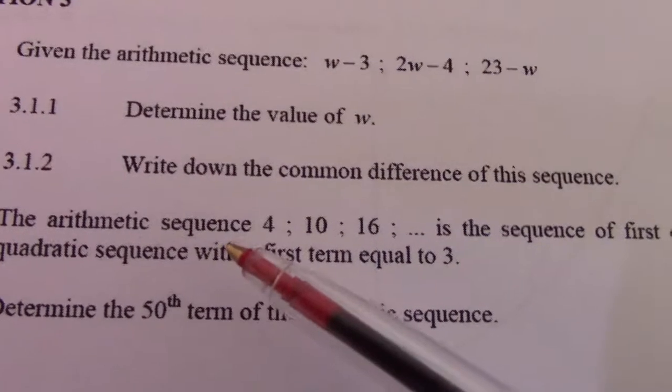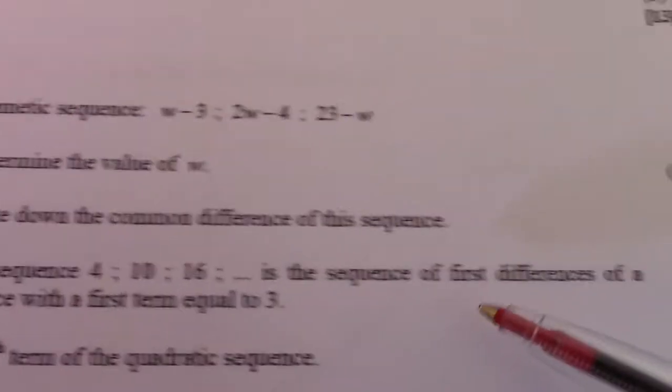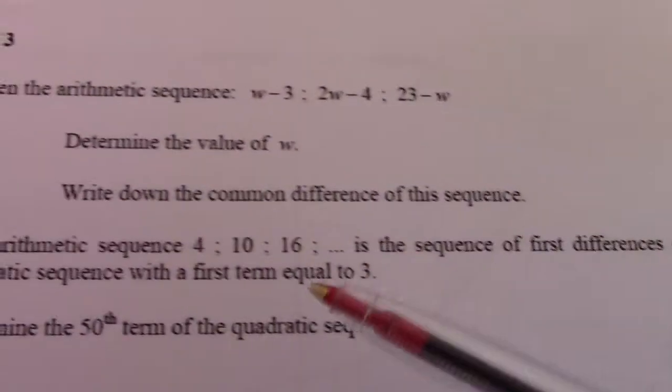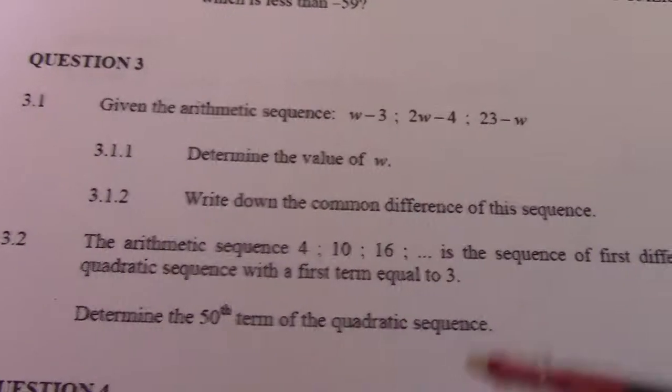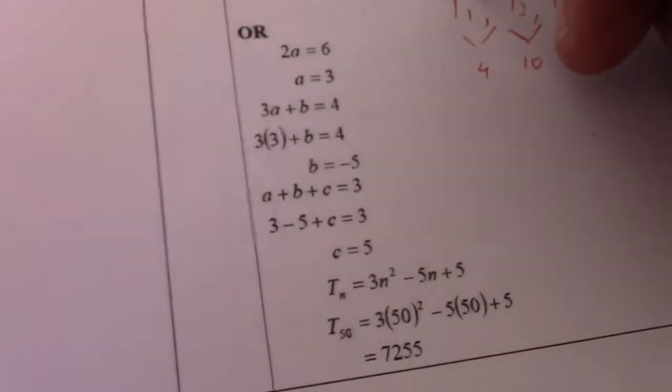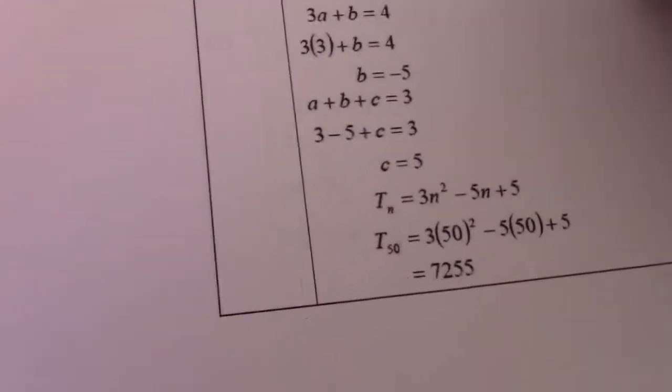So you see there, the arithmetic sequence 4, 10, 16 is the sequence of first differences, where the first term equal to a. So term 1, there, equal to 3. So term 1 is 3.